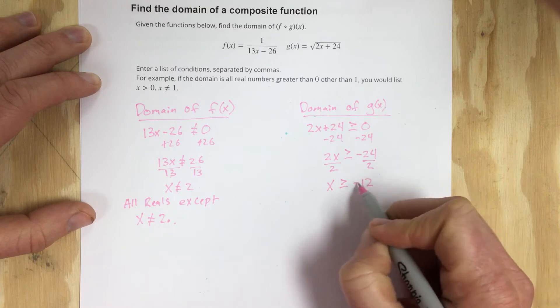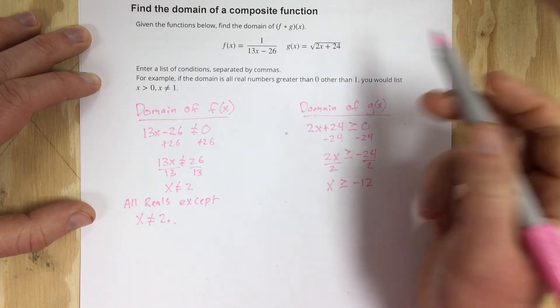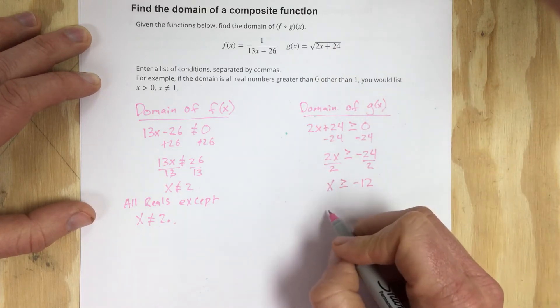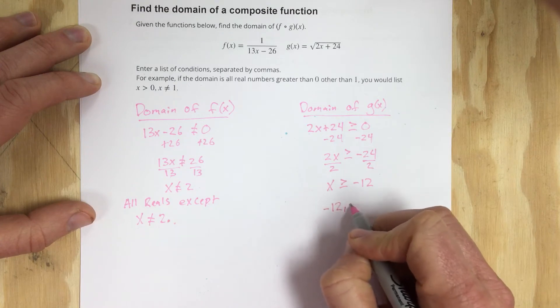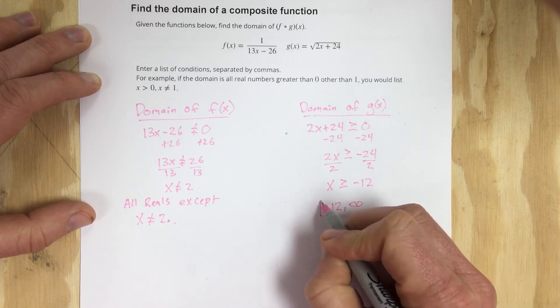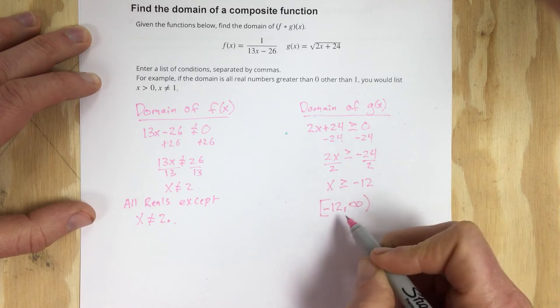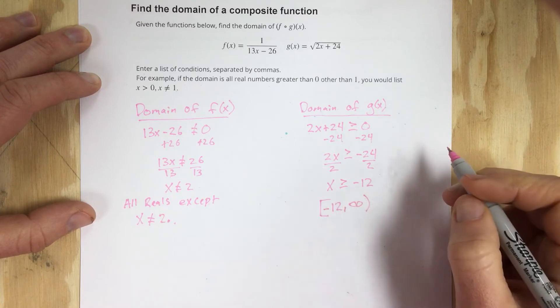So the lowest value that you can have for this g function is negative 12. So you could say that negative 12 to infinity, bracket on the negative 12, that's the domain of g of x.